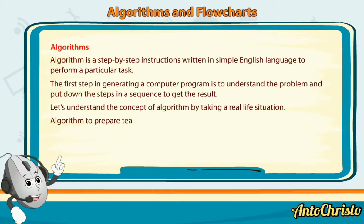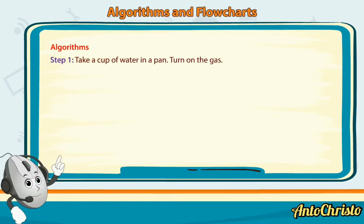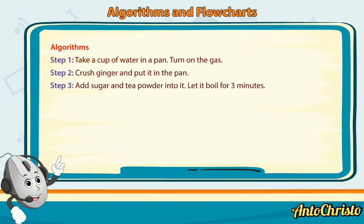Algorithm to prepare tea. Step 1: Take a cup of water in a pan. Turn on the gas. Step 2: Crush ginger and put it in the pan. Step 3: Add sugar and tea powder into it. Let it boil for 3 minutes.